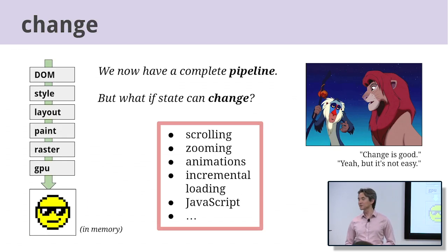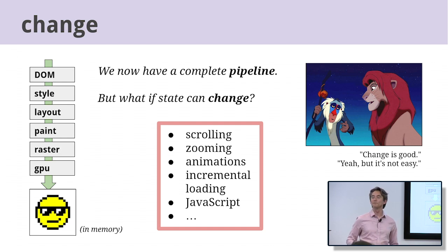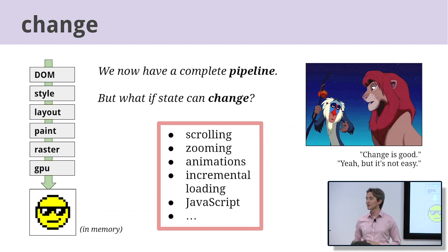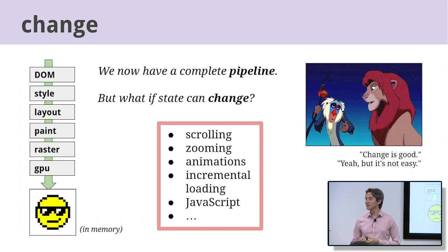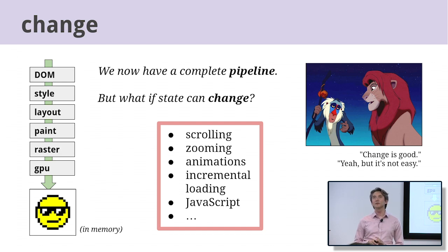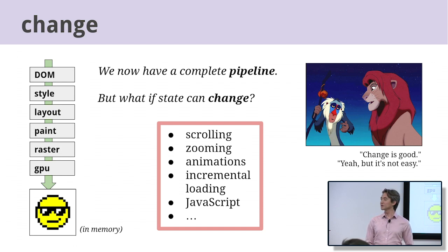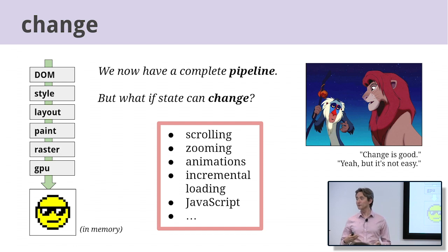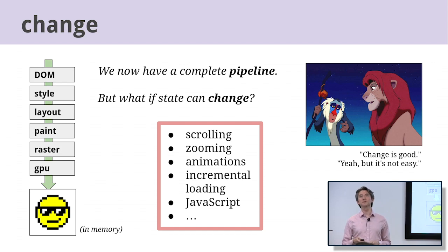Let's review. We've gone all the way from content through DOM, style, layout, paint, raster, and GPU to pixels in memory. But it's about to get a little more complicated. First, remember that rendering is not static — there are all kinds of things happening during the browsing session that can change the rendering dynamically. Running the full pipeline is expensive, so we want to avoid as much unnecessary work as possible.